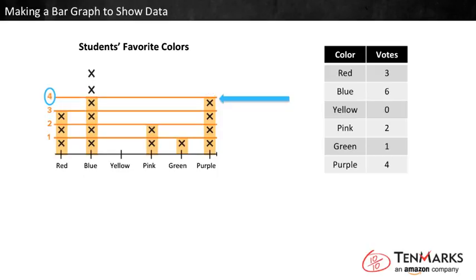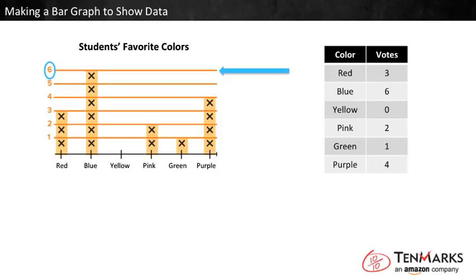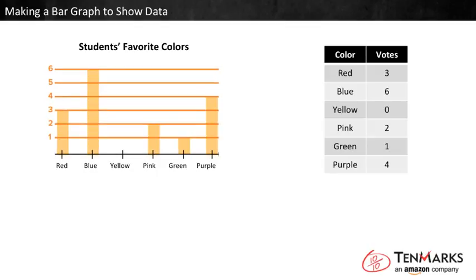Stacks that reach the three line have at least three votes. This line shows four votes, and here are five votes and six votes. Because all the X's are the same size, we can tell by the height of each stack how many votes that color got. In fact, we don't need the X's at all — we can tell how many votes a color got just by seeing what line its bar reaches up to.